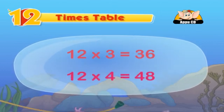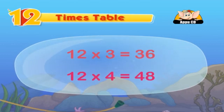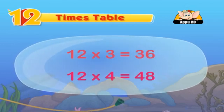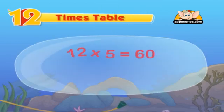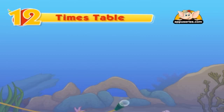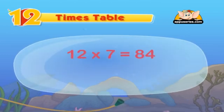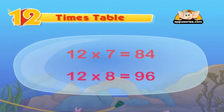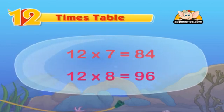That's how the times table can be so much fun! You all are doing great. 12 fives are 60, 12 sixes are 72, 12 sevens are 84, 12 eights are 96. Sing the table with me, it will be more fun.